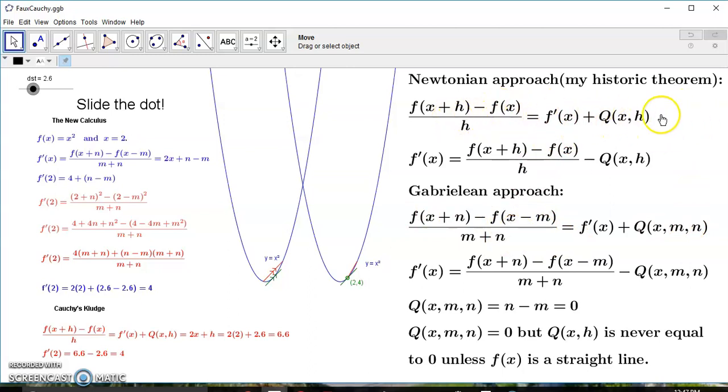This here is based on my geometric identity, which says that the non-parallel secant line slope, this non-parallel secant line slope, is equal to the tangent line slope plus the difference between the two.